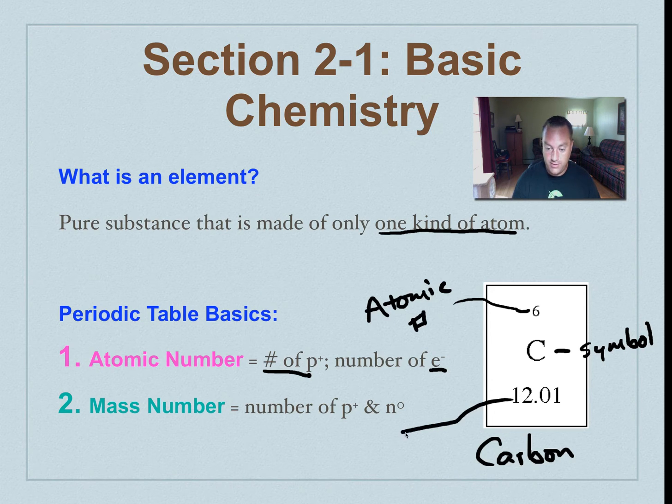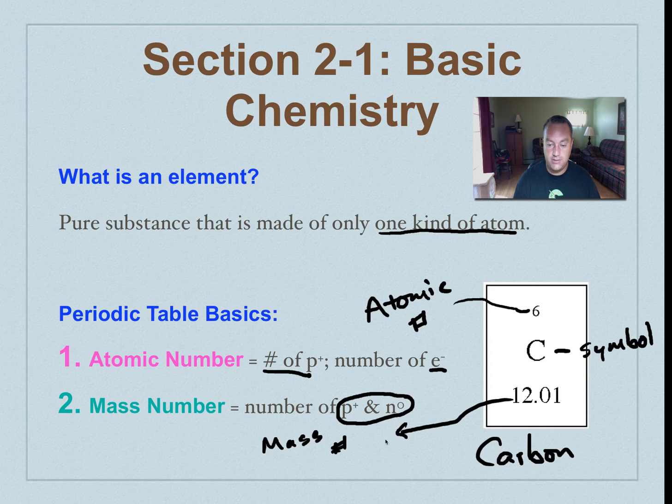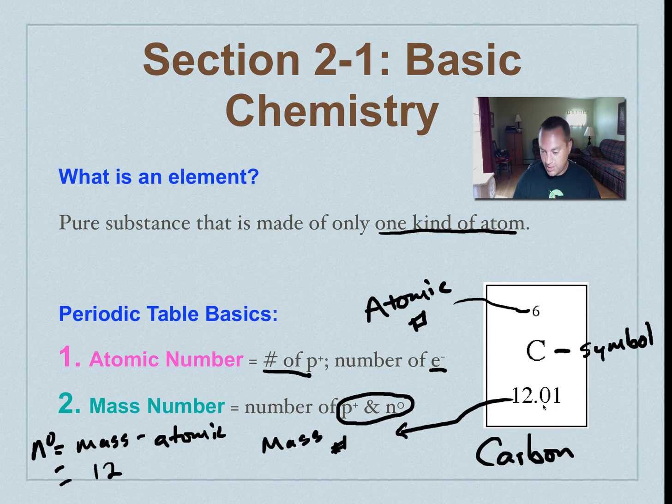This number 12 down here, that is going to be your mass number. And the mass number is going to give you the number of protons and neutrons. Basically, it's giving you the weight of the nucleus. So how do I figure out how many neutrons I have? Well, if I take the mass number and I subtract the atomic number from it, that's what I'm going to get. So in this case with carbon, the mass number is 12. And then we subtract the number of protons, which in this case is 6 because that's its atomic number. We'll figure out that it's got 6 neutrons. So very simple math on how to figure that out.